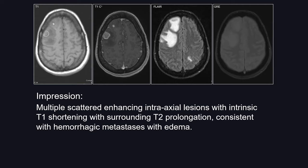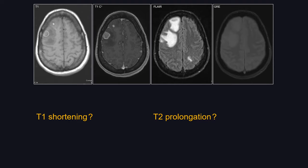For our clinical colleagues, some of the terminology we use is confusing. For example, what is T1 shortening? What is T2 prolongation? If there's T1 shortening, is there T1 prolongation? Is there T2 shortening? What is T1? What is T2? Those are terms we use all the time in our reports, so it's fair for them to ask. And as a radiologist, are you able to define those terms? Let's come back to this case at the end of the lecture.